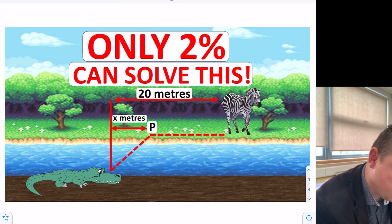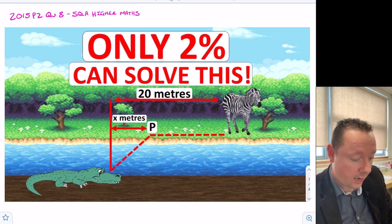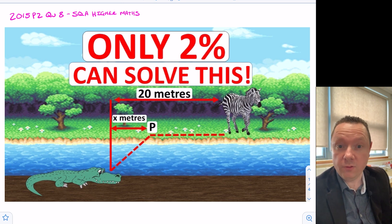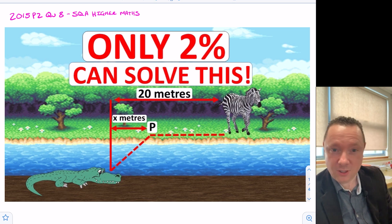was in the paper 2015 paper 2 question 8 of the SQA Higher Maths and this is not the question. This is a picture of what was in the question, the actual main image that they gave for this question which looks like it makes no sense. There's a crocodile, there's a zebra, opposite sides of a river.